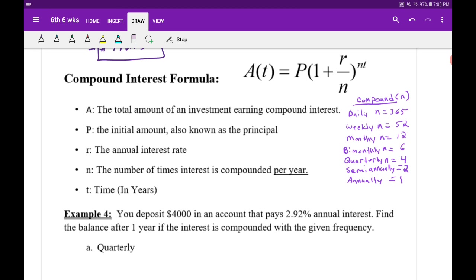First, capital A - it's not the same as the lowercase a from before. This means the total amount of an investment, what you plan to make later. P is the initial amount known as the principal - that's the cash you put up front to invest with, and then you hopefully get a bigger amount later.